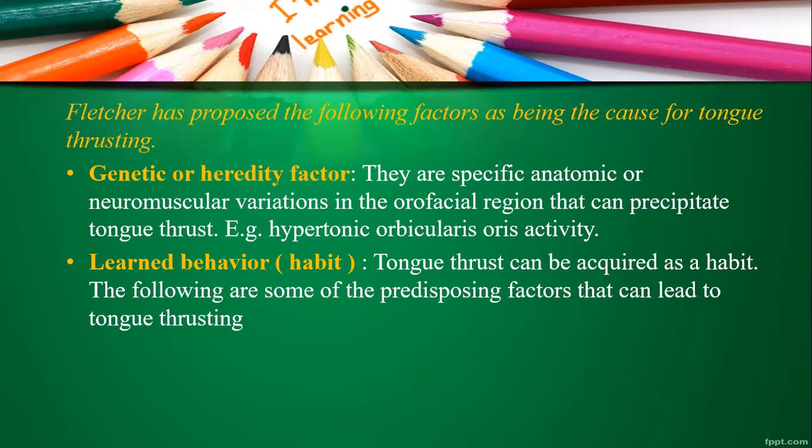The first heading is genetic or hereditary factors: specific anatomic or neuromuscular variations in the orofacial region can precipitate tongue thrust — for example, hypotonic orbicularis oris activity. This can be genetically passed on to the next generation. By taking proper history and checking parental history, you can assess tongue size, tongue variations, and orbicularis oris activity to relate findings from the child to the parents or relatives.